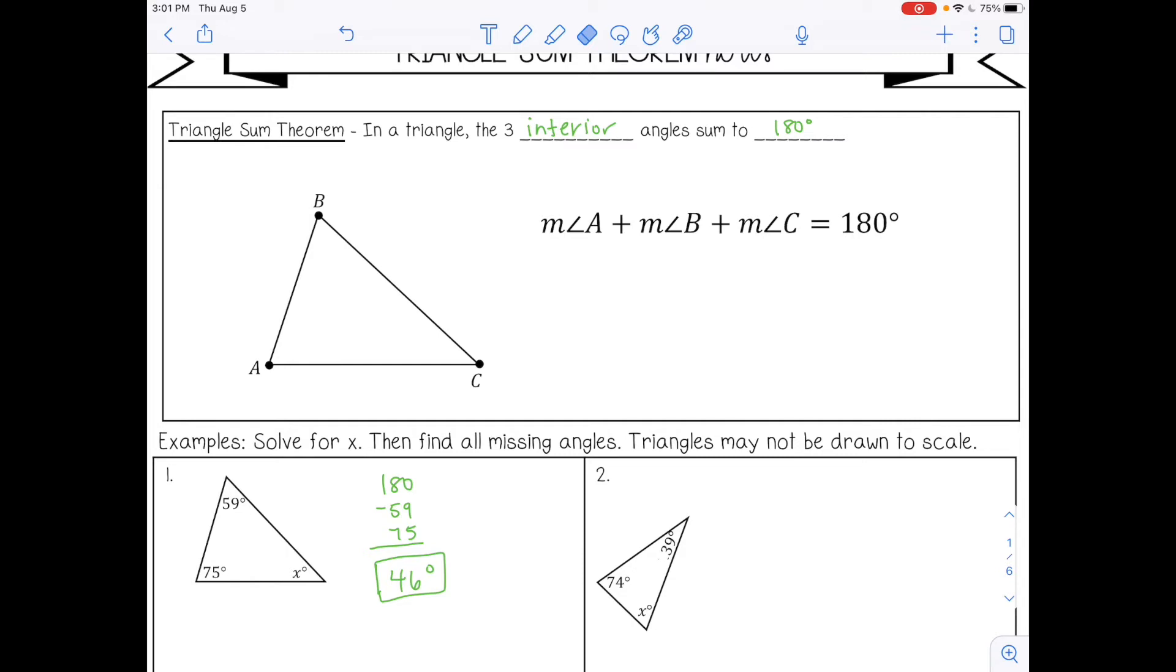Number two, same thing. I'm going to take 180 and I'm going to subtract 74 and 39. So you can do it this way instead of setting up an equation. And that gives me 67 degrees.